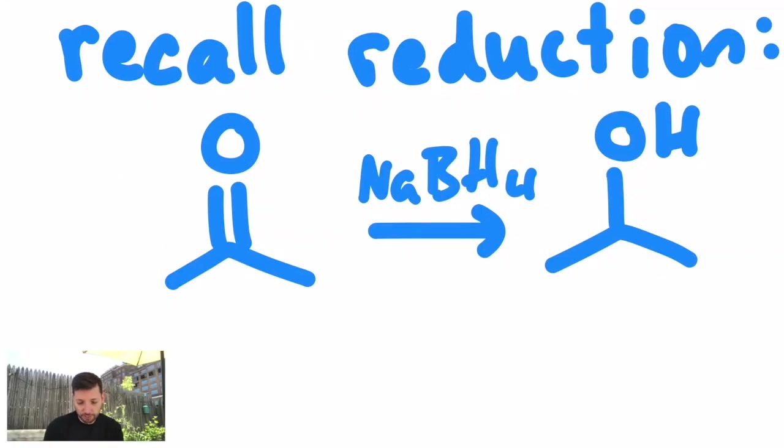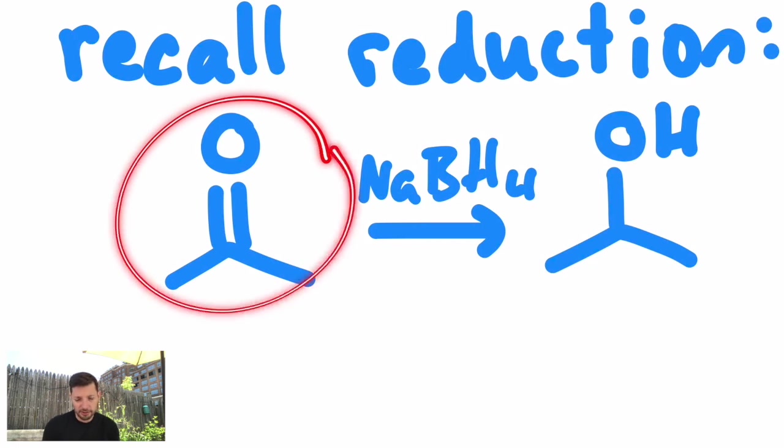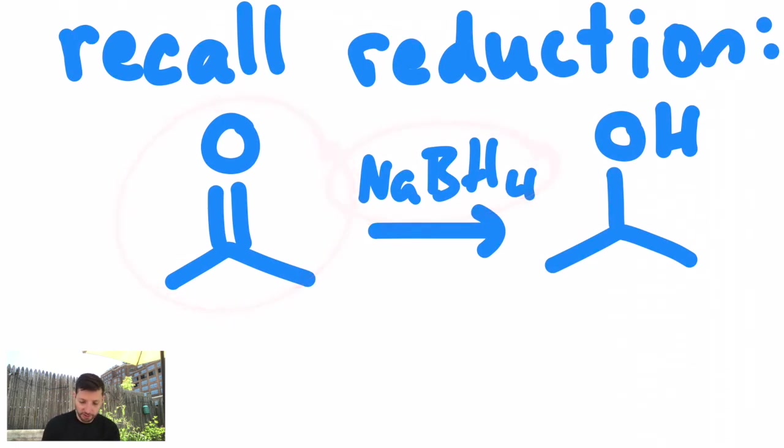Hey there chemists. In the last lesson we looked at reductions, which involves taking carbonyl compounds like aldehydes and ketones, adding reagents like sodium borohydride or lithium aluminum hydride, and turning them into alcohols.